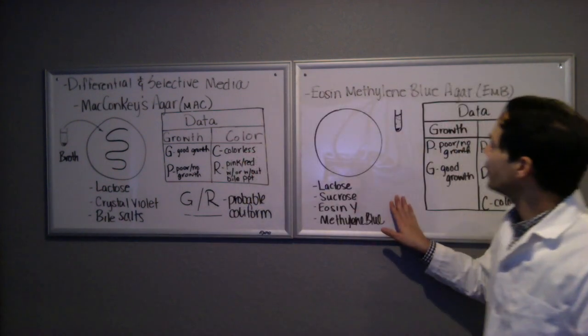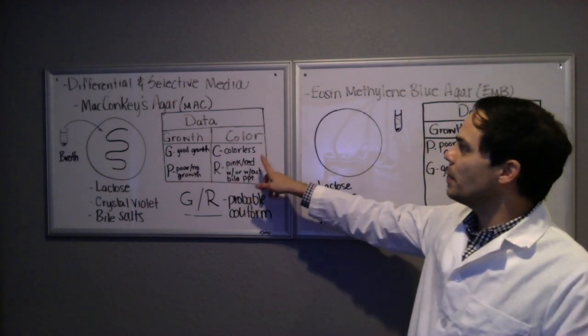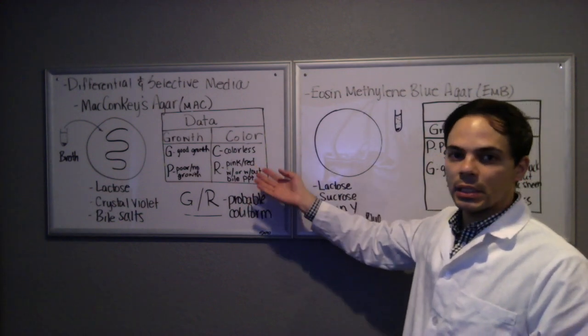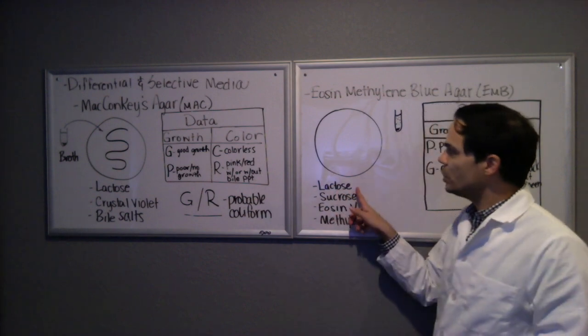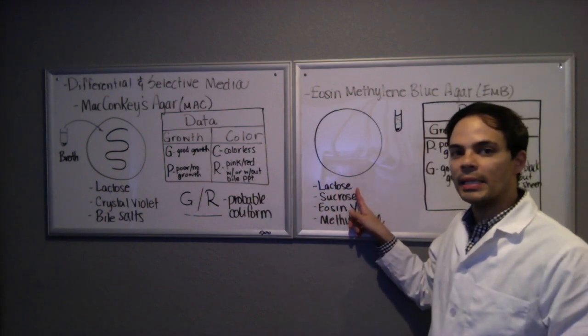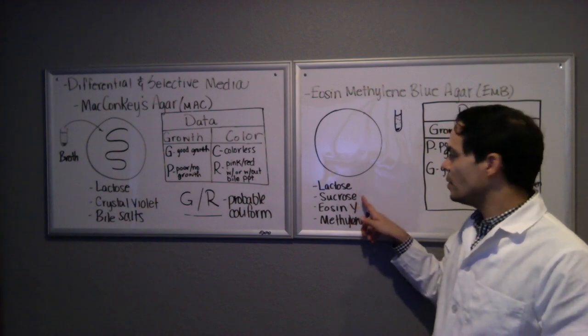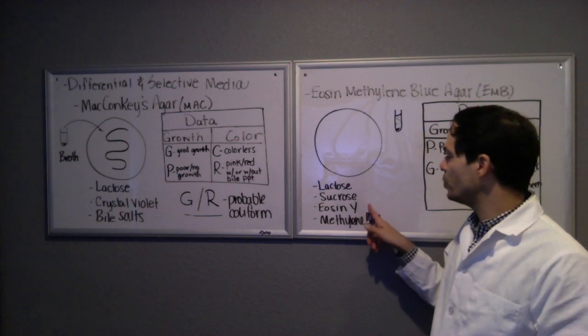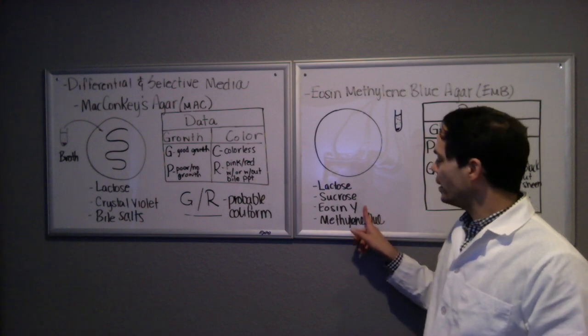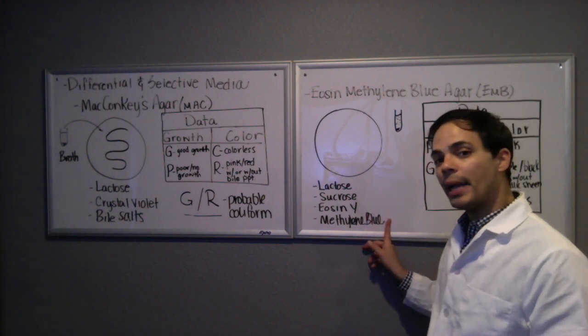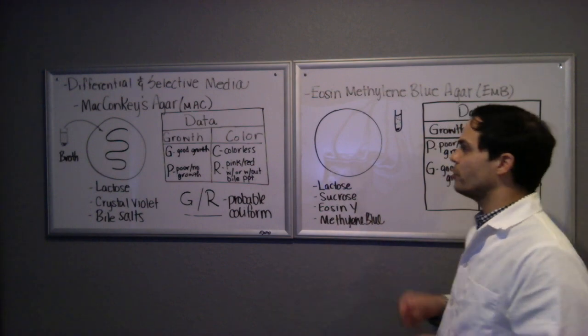Now, this medium here, eosin methylene blue agar, is very similar to the McConkey's agar. In fact, they test for the exact same thing, but with a different type of formulation. So we still have lactose in this media as the differential agent because we want to know if the bacteria do ferment lactose. There's also sucrose, which is another type of sugar, and two selective agents, eosin-Y and methylene blue, which are both dyes that will prevent the growth of gram positive bacteria and select for the growth of gram negatives.